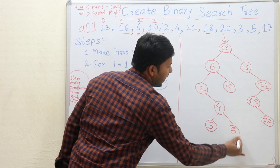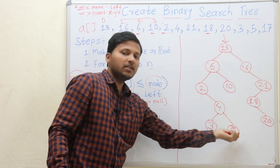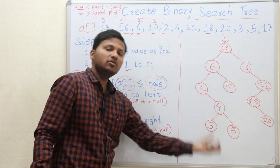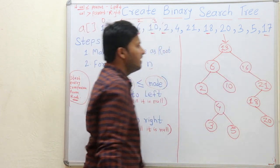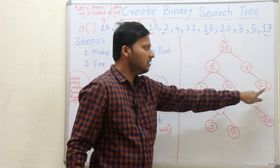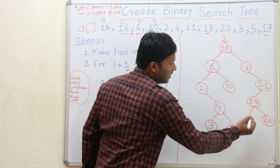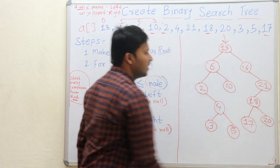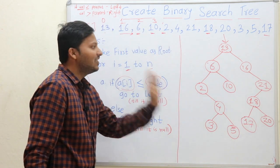You have to keep making comparisons until you find a null place to keep that node. The last element is 17: greater than 13, greater than 16, less than 21, less than 18, so 17 goes here as the left child of 18. This binary search tree is now ready.